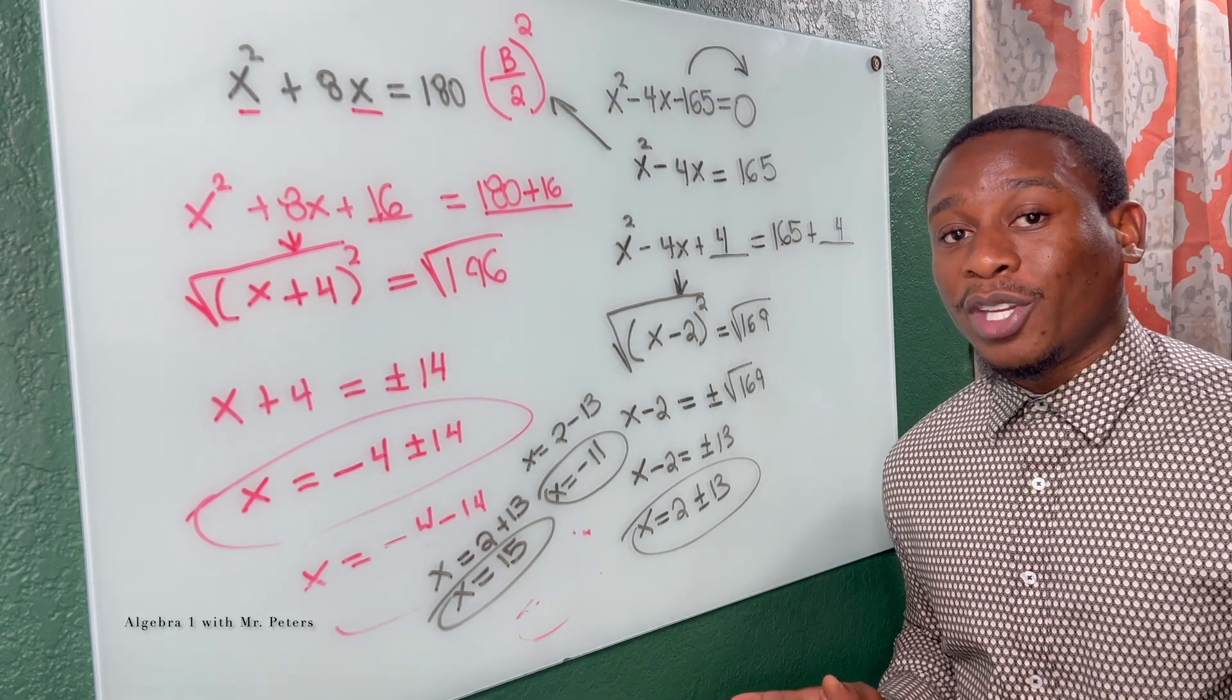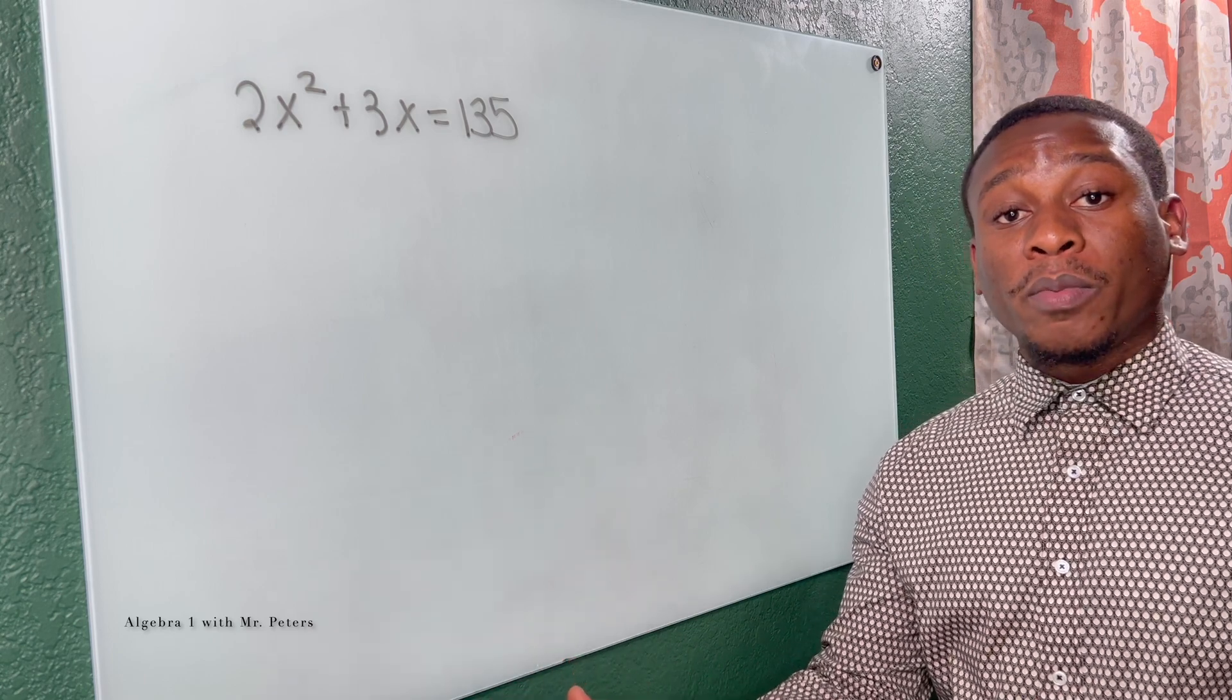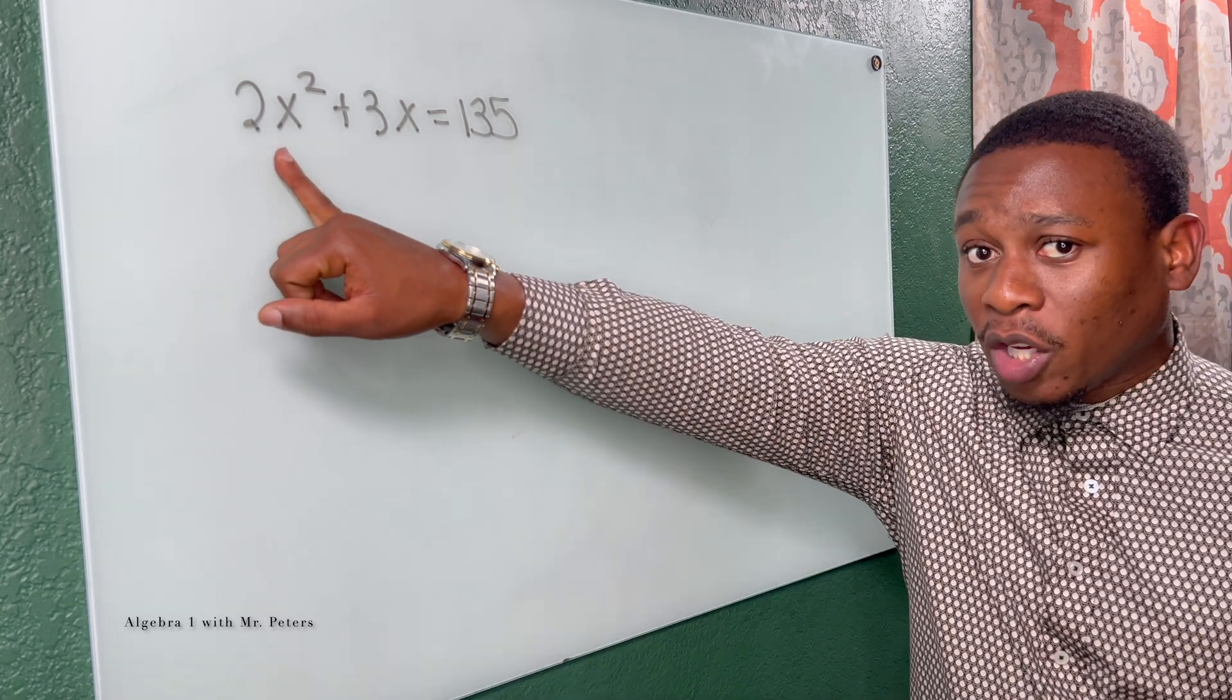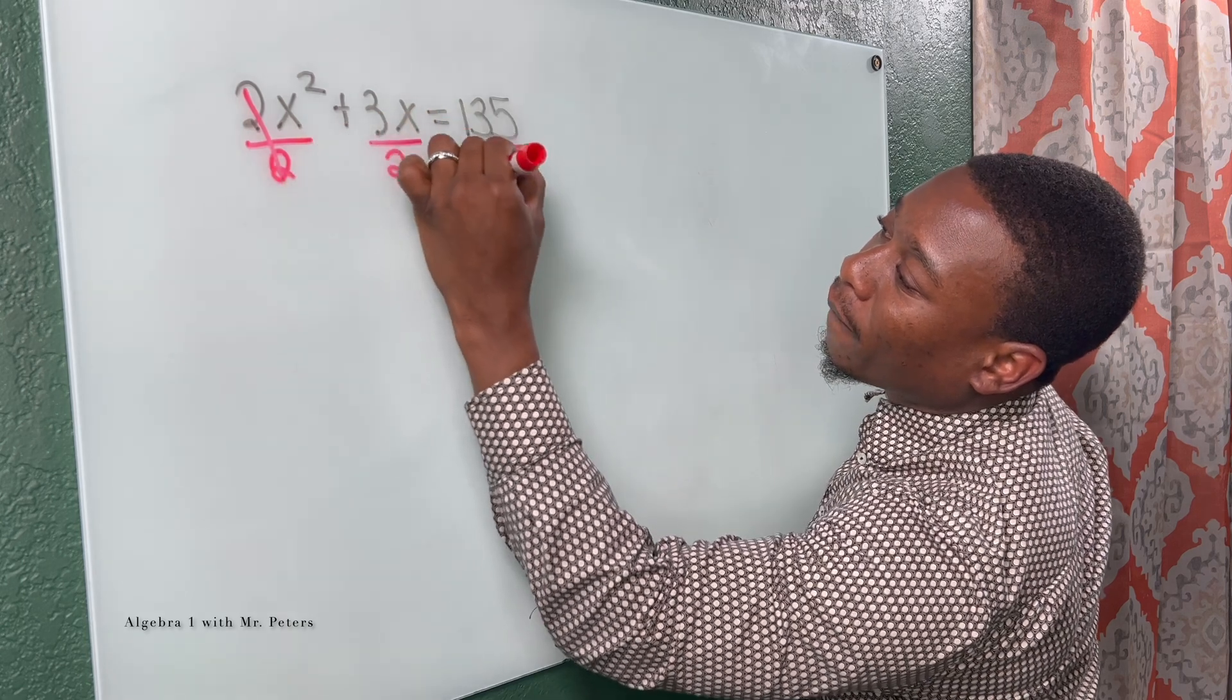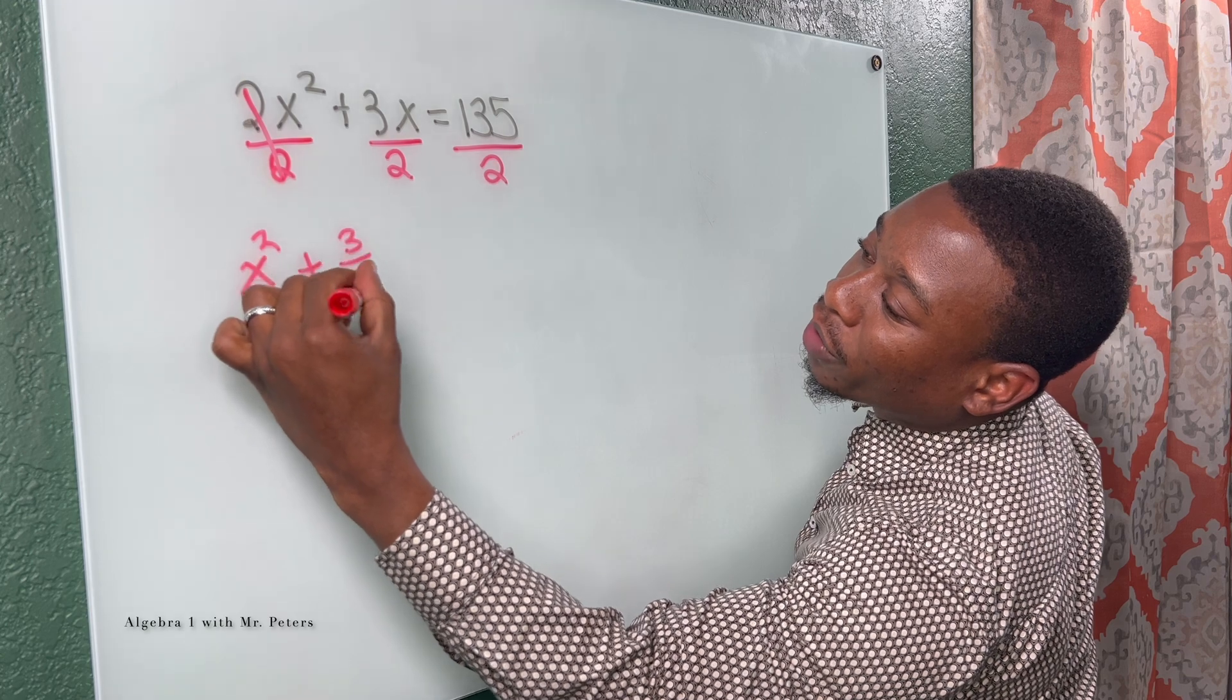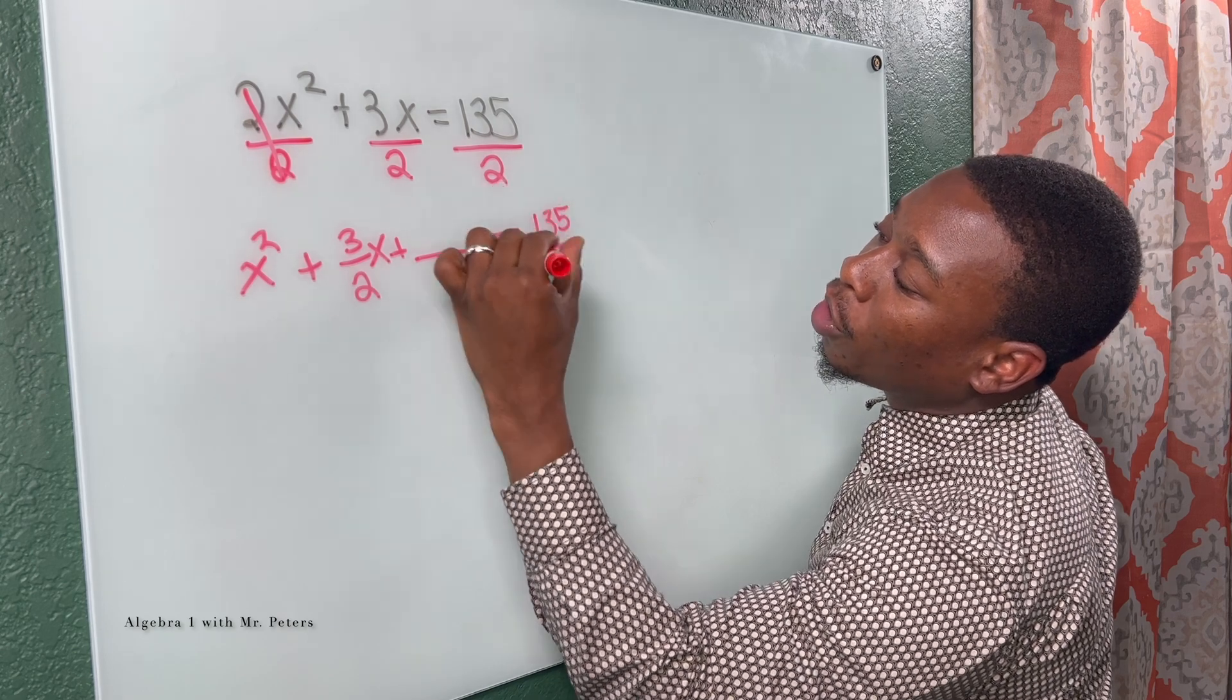We're gonna go to the last part of this video where we see the last two problems, and you definitely wanna see these because you're gonna see them on the EOC. In problem number three, we're now dealing with a problem where we do have a lead coefficient and we know it has to be one. So first thing we wanna do, let's divide everything by two. So now we have X squared plus three over two X plus our C is equal to 135 over two.